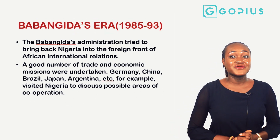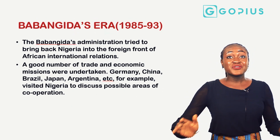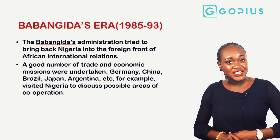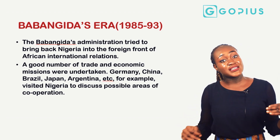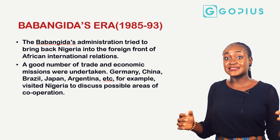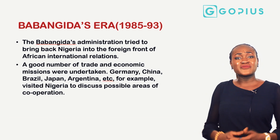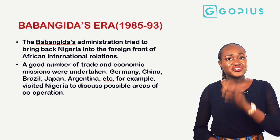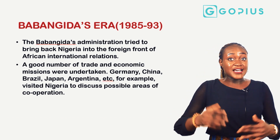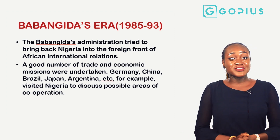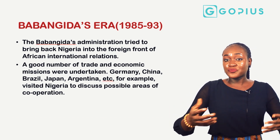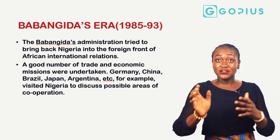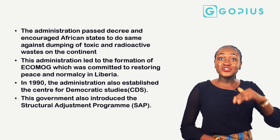The Babangida era from 1985 to 1993 tried to bring Nigeria back to the front of African international relations, since the previous administration had put Nigeria in a position of conflict with other nations. Many trade and economic missions were undertaken — countries like Germany, China, and Brazil visited Nigeria to discuss possible areas of cooperation. This era allowed other countries to transact with Nigeria, especially in the areas of economy and improvement.